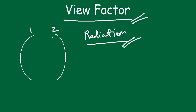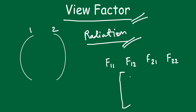Whenever we have two surfaces, we will have four view factors. They are F11, F12, F21, and F22. These are the four view factors when dealing with radiation heat transfer between two surfaces. If we represent this in matrix form, we get F11, F12, F21, F22 — this is known as the view factor matrix.